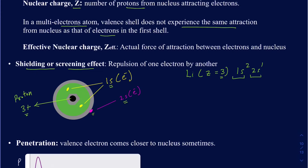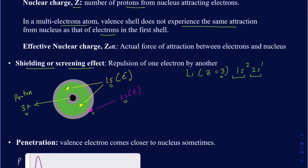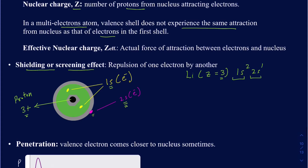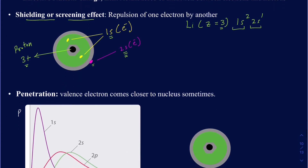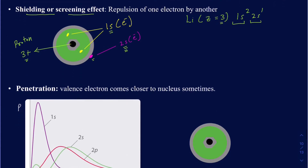That's why we say the effective nuclear charge is the actual force experienced by the 2s electrons, taking the shielding effect into account. Sometimes, there is also penetration of the valence electron, which brings those electrons closer to the nucleus — that is what's called penetration.